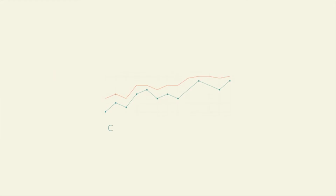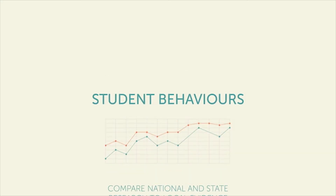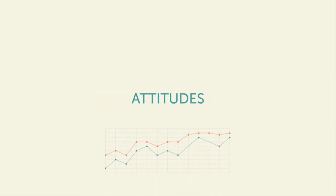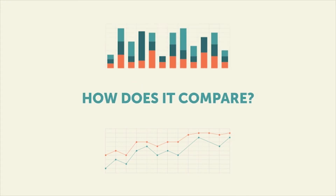The next step is to compare national and state research to local evidence. What does state and national research tell you about student behaviours, attitudes, strengths, influences and decisions? How does it compare to the local evidence you have collected? Consider how the evidence can shape your teaching and learning programs.